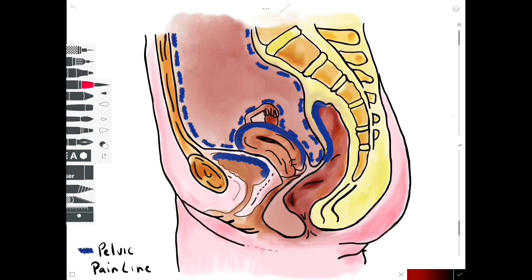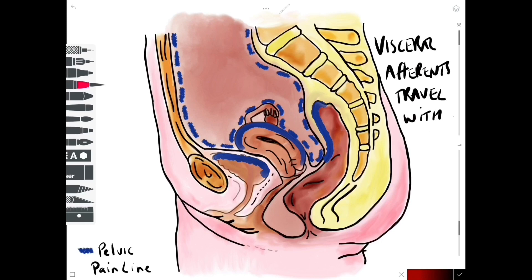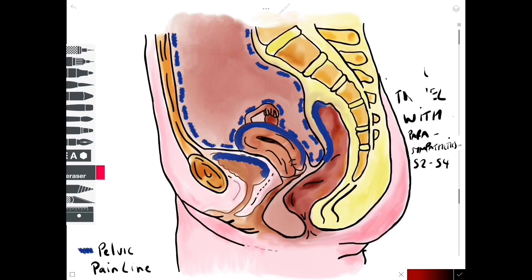Any pain felt in the same viscera below the pelvic pain line — such as the floor of the bladder, the cervix, the vagina, the lower portion of the rectum, and the anal canal — instead of traveling with the sympathetic nervous system, is referred via the parasympathetic nervous system via S2, S3, and S4. This means that pain traveling back via T10 to L2 via the sympathetics is likely to be felt over the anterior thigh, as high up as the belly button, over the tummy, and over the suprapubic region. Any pain felt via the parasympathetics — S2, S3, S4 — is likely to be felt in the buttocks and in the posterior thigh.